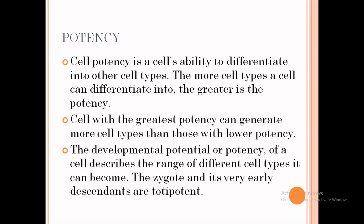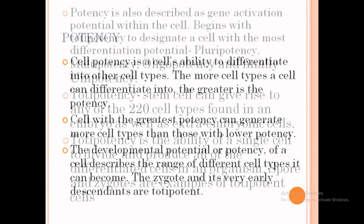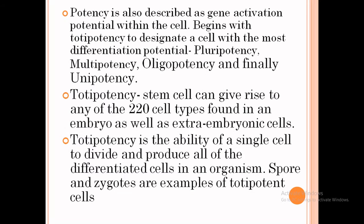The zygote and its very early descendants are totipotent. Zygote is the example of a totipotent cell. These cells have the potential to develop into a complete organism. Totipotent cells are common in plants but uncommon in animals after the two to four cell stages. As development proceeds, the developmental potential of individual cells decreases until their fate is determined. Potency is also described as gene activation potential, beginning with the totipotent cell, then pluripotency, multipotency, oligopotency, and finally unipotency.